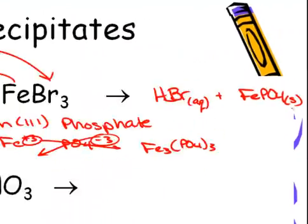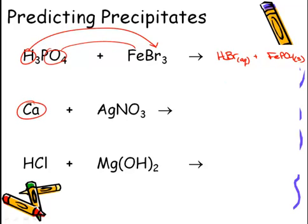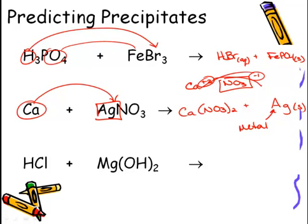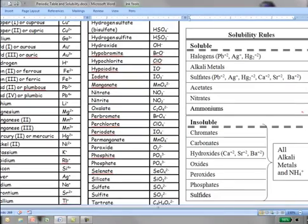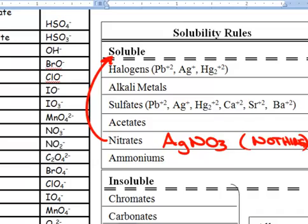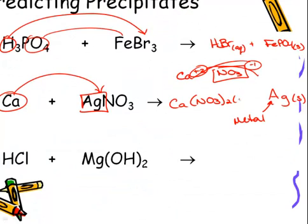Here we have a single replacement reaction. Calcium is a metal, so it pairs with the nitrate. Calcium is +2 and nitrate is -1, giving Ca(NO3)2 as our first product. This leaves silver as our lone element — since silver is a metal, it's a solid. Calcium nitrate: nitrates are soluble with no exceptions, so Ca(NO3)2 is aqueous.